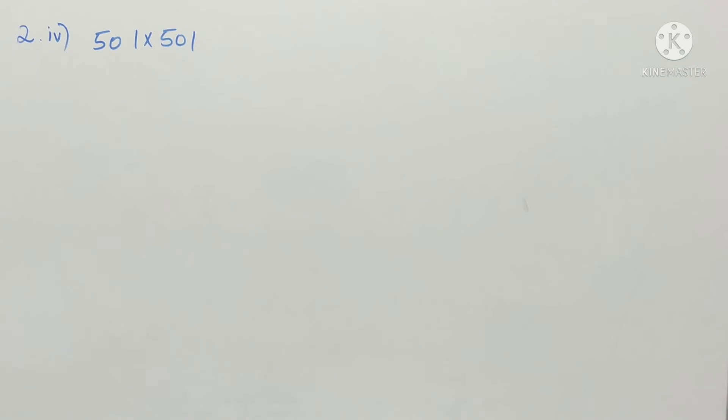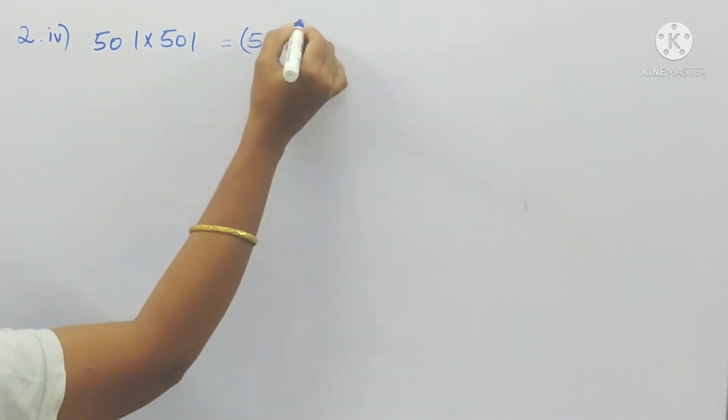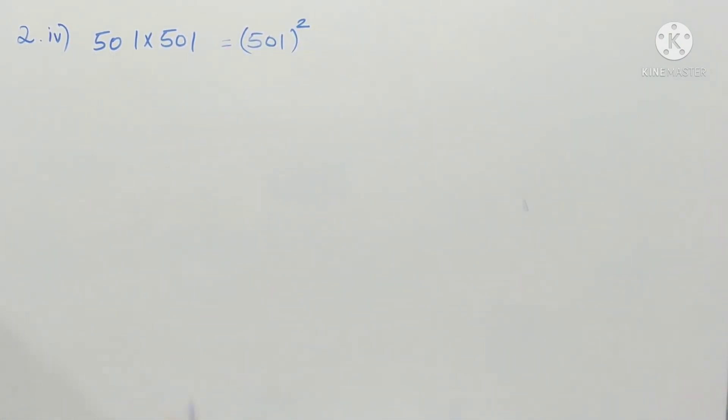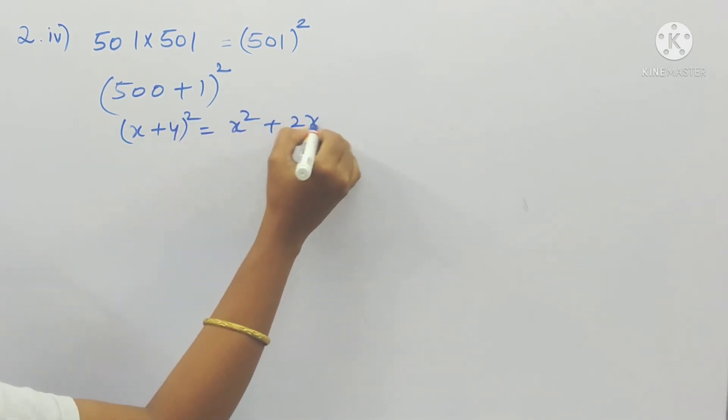Next our fourth one. 501 into 501. So 501 into 501 means 501 whole square. So I can write this as 500 plus 1 whole square. Immediate round figure we should take. So this is in the form of x plus y whole square.